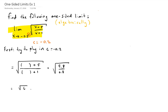When we're dealing with a one-sided limit and we want to evaluate it algebraically, the first thing that we do is the same thing we would do if we were evaluating a normal limit, and that is try to plug in the c value. For us, our c value is negative 0.2. So let's try to plug that in — let's plug in c equal to negative 0.2.